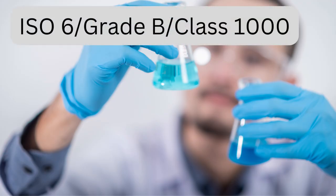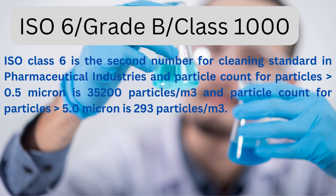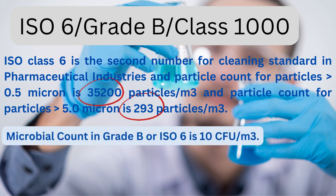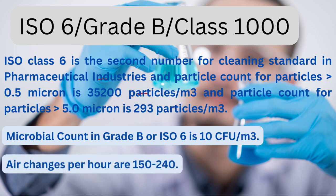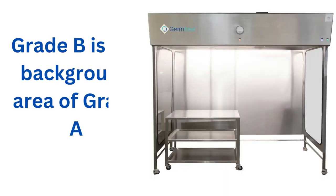ISO 6 corresponds to Grade B or Class 1000. ISO class 6 is the second cleanest standard in pharmaceutical industries. Particle count for particles greater than 0.5 micron is 35,200 particles per cubic meter, and particle count for particles greater than 5.0 micron is 293 particles per cubic meter. Microbial count in Grade B or ISO 6 is 10 CFU per cubic meter. Air changes per hour are 150 to 240. Grade B is the background area of Grade A, meaning the area in which the laminar air flow hood is placed.